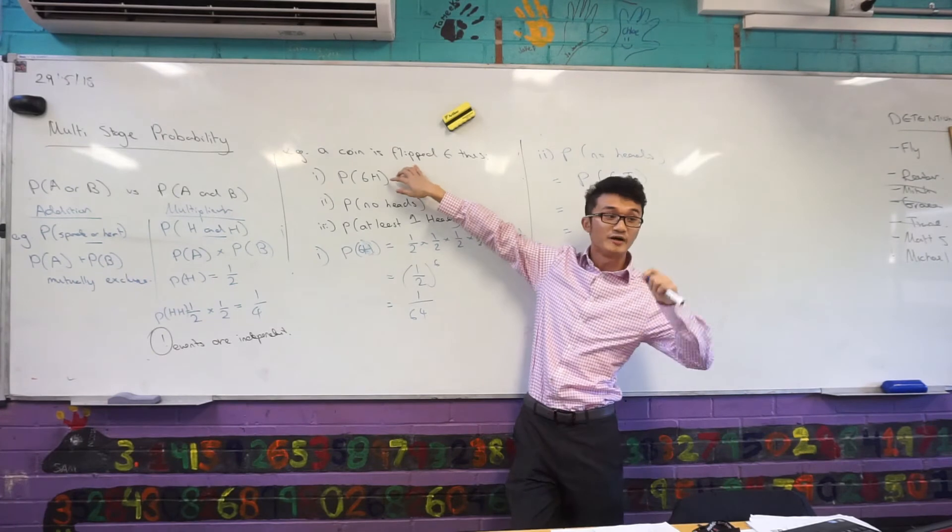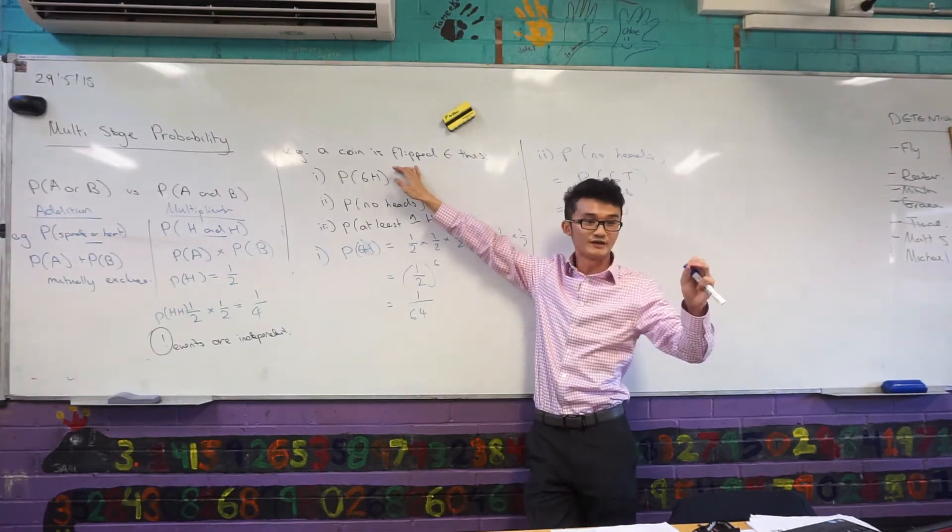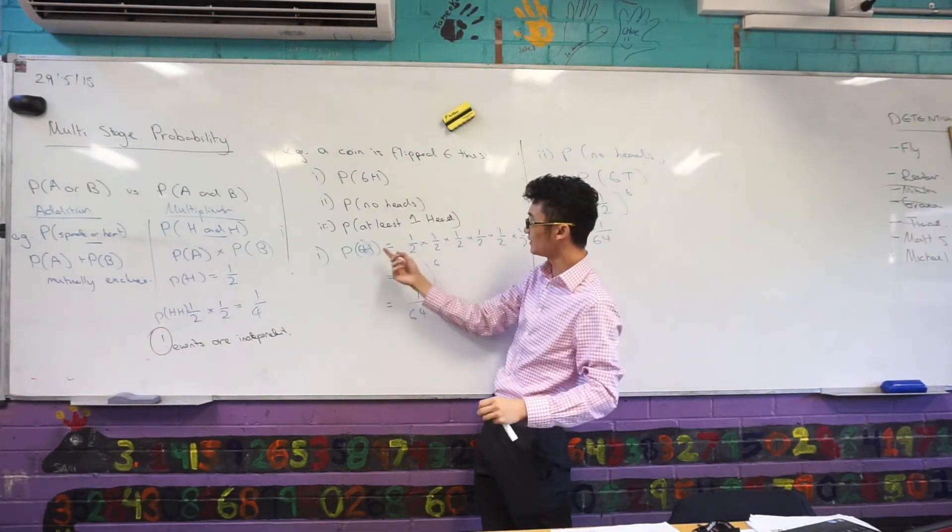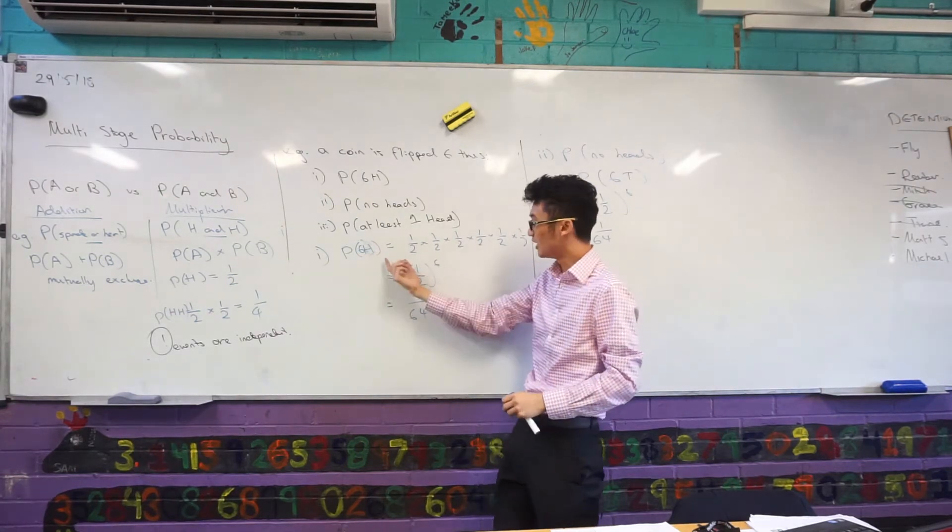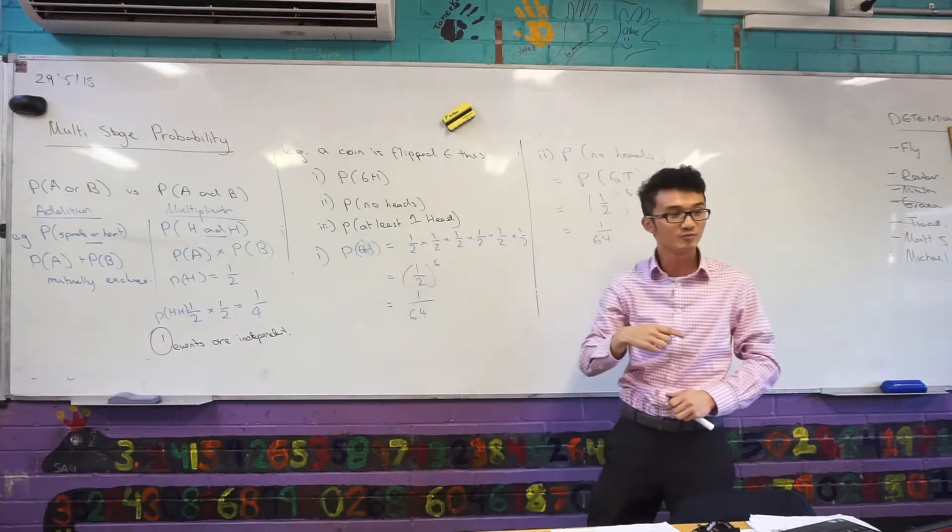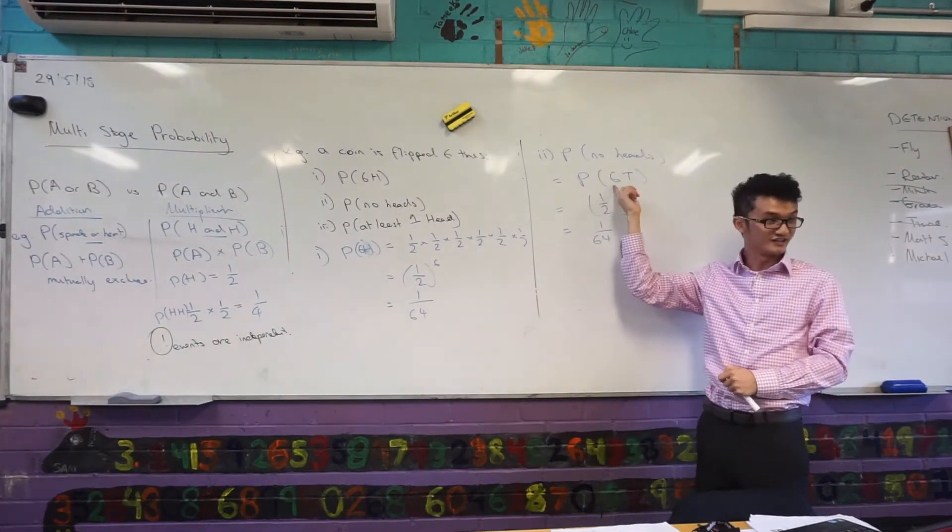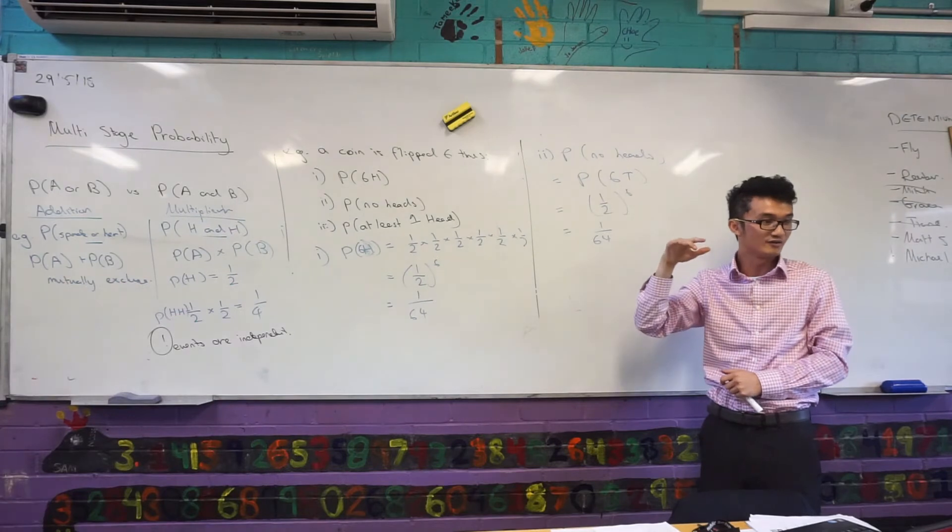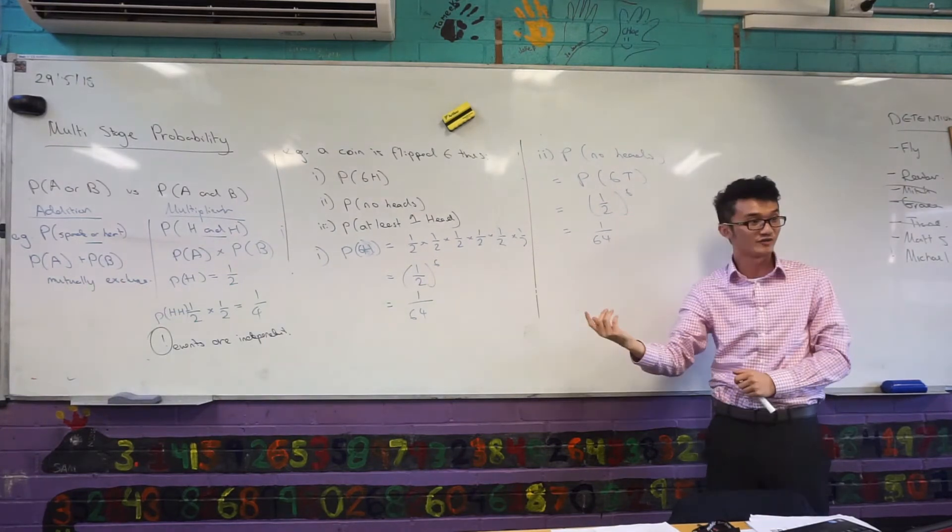My best advice to you with probability, don't overcomplicate the question. If I'm just looking at six heads, I can use this multiplication principle. Multiply half by itself six times, same thing with probability of no heads. Well, I know that's just getting six tails. There's no heads in that one. And so that would just be half to the power of six.